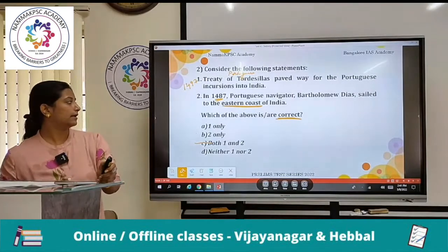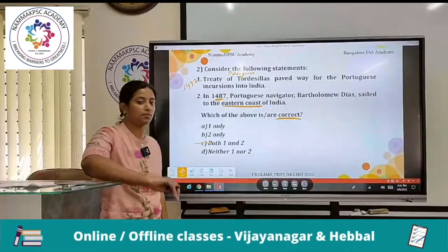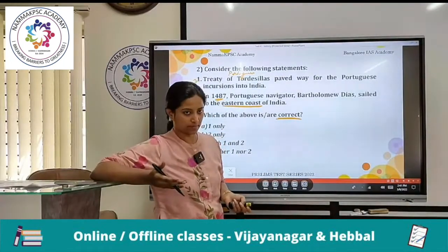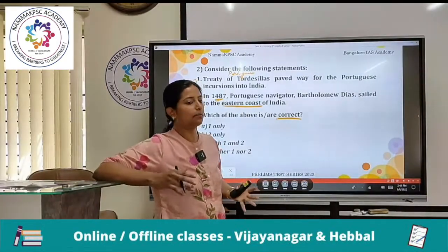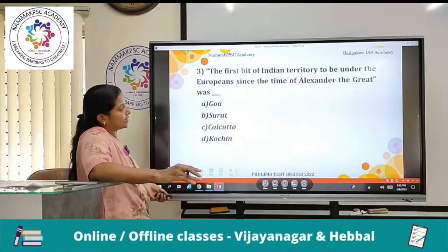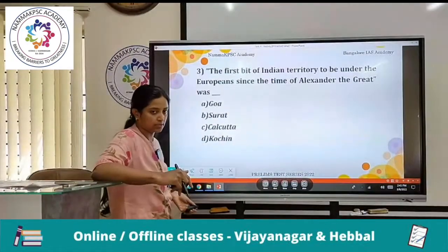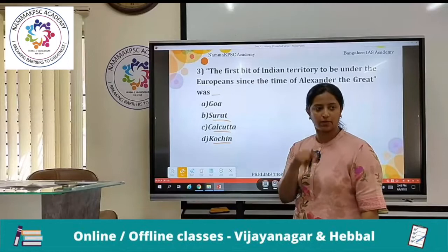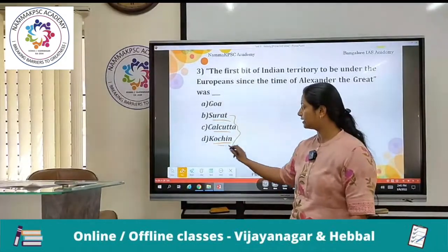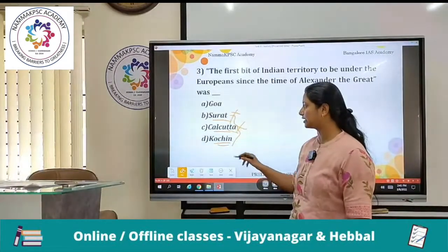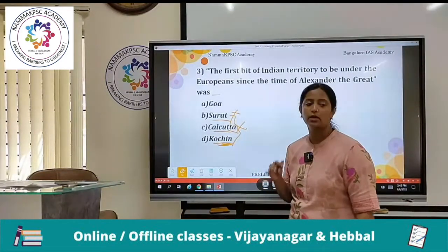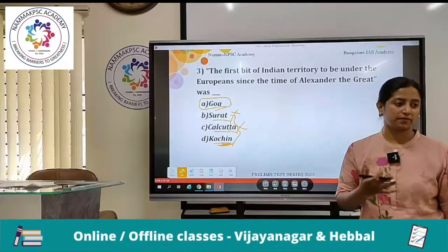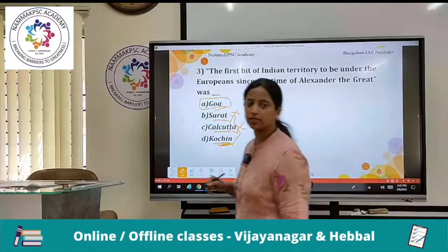1487 is not something we can easily remember, but the next fact you will remember is 1498, because Vasco da Gama comes in. Both Bartolomeo Diaz as well as Vasco da Gama are a little important. The first bit of Indian territory to be under Europeans since the time of Alexander the Great — if you look at the options: Surat or Calcutta or Cochin — Portuguese never had any say in Surat. Cochin was more of French settlements. So obviously it is Goa. If you connect the dots as to who came in first, we can easily figure out the answer is Goa.